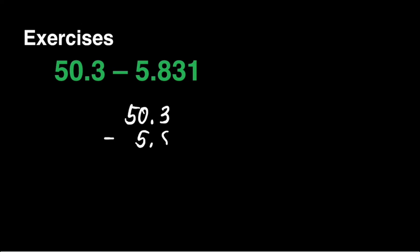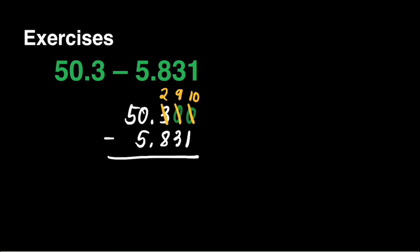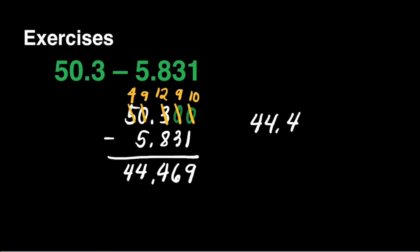We have to align the decimal point, and we notice that we have to add zeros to the empty spaces so that these numbers will have the same number of digits. We're ready to subtract. 0 minus 1 cannot be, so we will borrow from 3. This 0 will become 10, this 0 will become 9, and the 3 will become 2. 10 minus 1 is equal to 9. 9 minus 3 is equal to 6. 2 minus 8 cannot be, so we will borrow from 5 because we cannot borrow from 0. This 5 will become 4, this 0 will become 9, and our 2 will become 12. 12 minus 8 is equal to 4, then decimal point. 9 minus 5 is 4, then bring down 4. Our final answer is 44 and 469 thousandths.